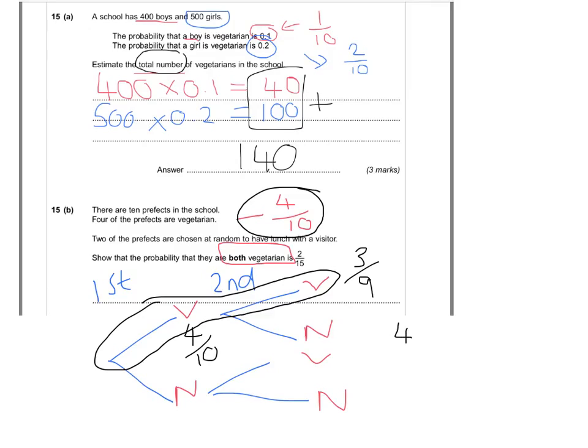So, that means I've got 4 out of 10 on the first pick, and I've got 3 out of 9 on the second pick. Now, if I multiply these two probabilities out, that's going to get me 12 out of 90. Now, the question said, show that this is equal to 2 fifteenths.